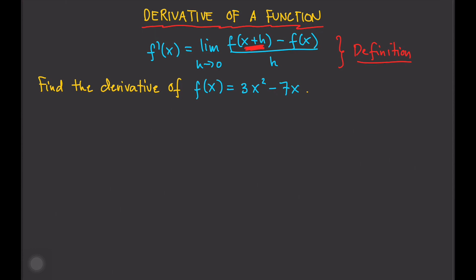Let's have another example: find the derivative of f of x equals 3x squared minus 7x. Again, let's follow the definition. f prime of x is equal to the limit as h approaches 0 of f of x plus h.